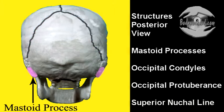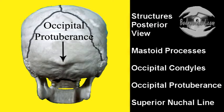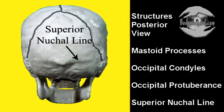The mastoid process. The occipital condyles, which articulate with the atlas. The occipital protuberance. The superior nuchal line.